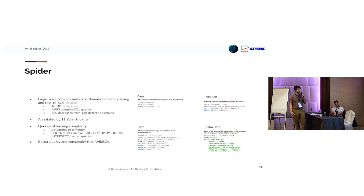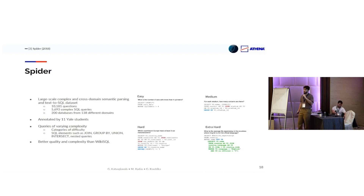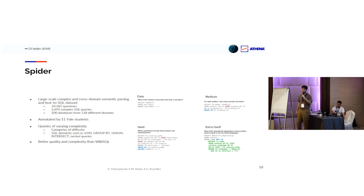In 2018, Spider was released, which is a large and complex dataset for this problem. It contains full relational databases and 10,000 different question elements from 138 different domains. It was created by experts in the database field, and as a result it has much better quality, much better and more complex queries. At the moment, it is the go-to dataset to train and evaluate a text-to-SQL system.